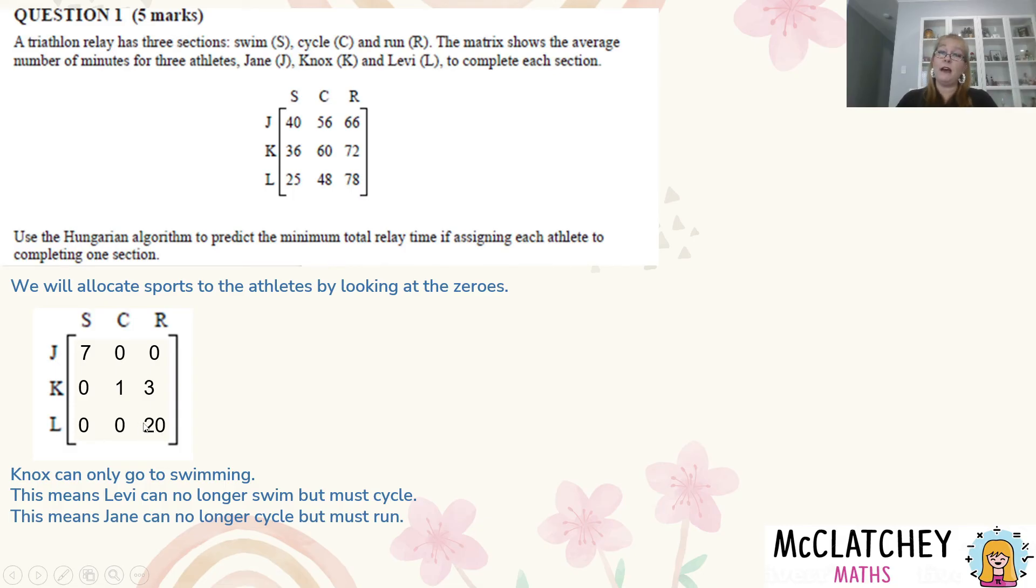Now I could draw a bipartite graph to represent these allocations. It wasn't necessarily required as part of the solution because we're just trying to work out that minimum total relay time. So that's what we're doing. Now we've got our next mark here for assigning those athletes, but this is what we want to focus on.